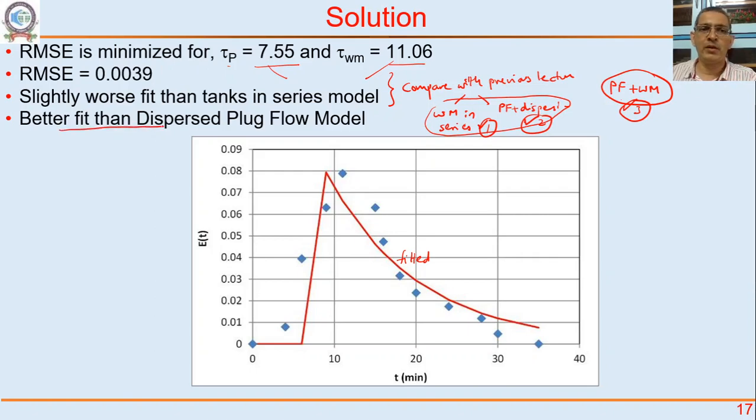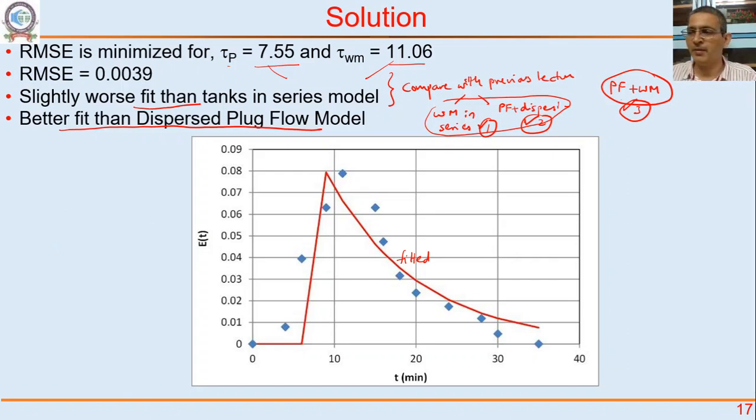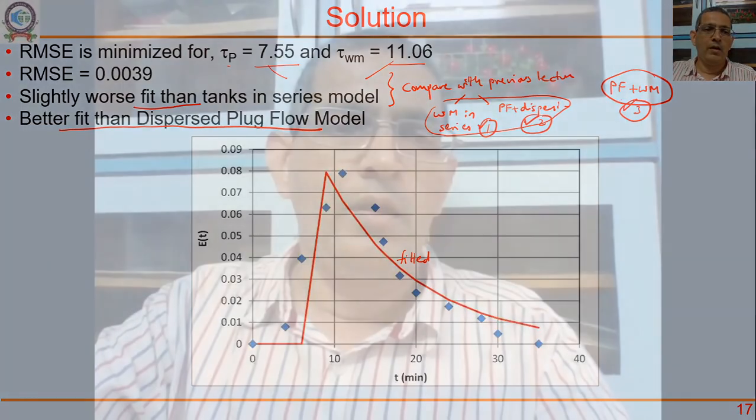Compare this fit with the models from the previous lecture — well-mixed tanks in series and plug flow with dispersion. This lecture's plug-flow-plus-well-mixed fit gives a better result than the dispersed plug flow model but is worse than plug flow with dispersion. Determine this yourself. When fitting a real reactor you can try well-mixed tanks in series, plug flow with dispersion, plug flow plus well-mixed, plug flow plus multiple well-mixed tanks, dead zone, bypass, and many other combinations.